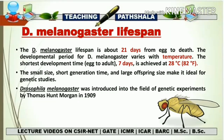The lifespan of Drosophila melanogaster is about 21 days from egg to death. The developmental period varies with temperature. The shortest developmental time — egg to adult — is seven days, achieved at 28 degrees Celsius. Their developmental period is highly temperature-specific. Small size, short generation time, and large offspring size make it ideal for genetics studies.